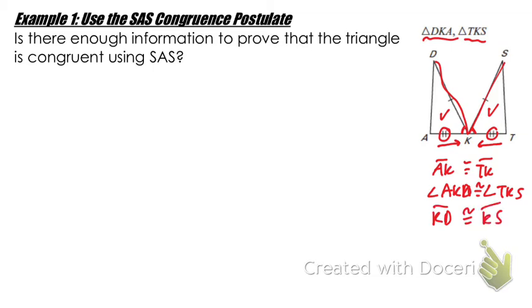And according to our evidence and what we have marked, we can say that these two triangles are congruent. So we can say triangle DKA is in fact congruent to triangle TKS by side angle side.